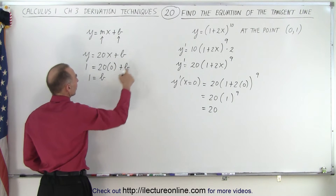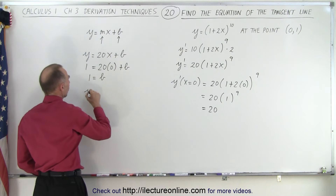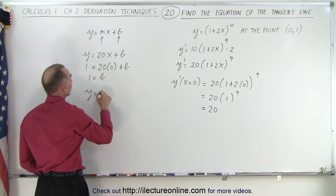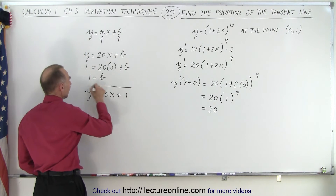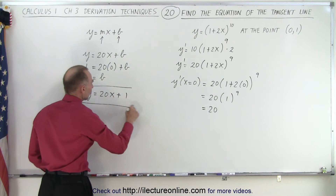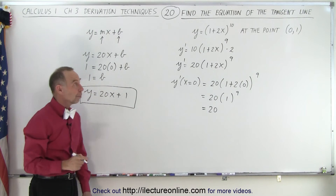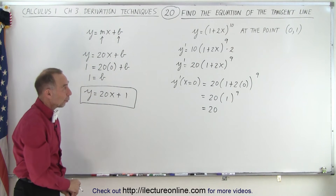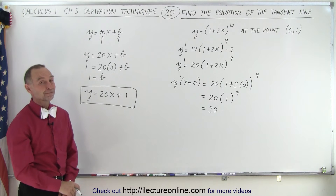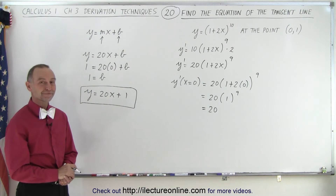That gets plugged back in. So now we have y is equal to 20x plus 1. And that is the equation of the tangent line at the point x equals 0, y equals 1. And that is how it's done.